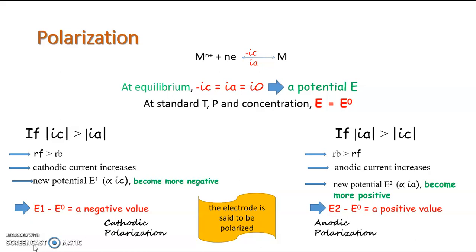As we seen earlier, for this electrode reaction, the forward reaction is the deposition reaction which creates a deposition potential through which a cathodic current is generated, and the backward reaction is the decomposition or dissolution reaction which makes a deposition potential by which an anodic current is created.